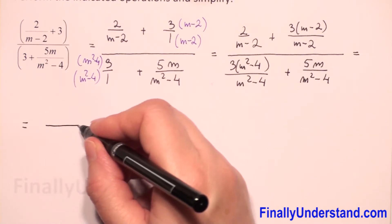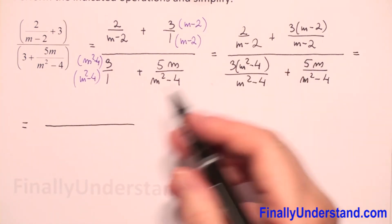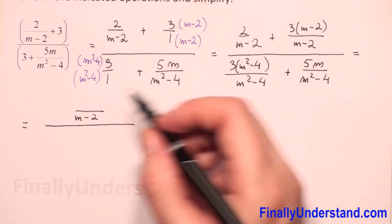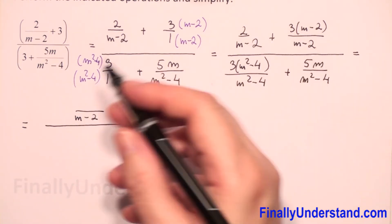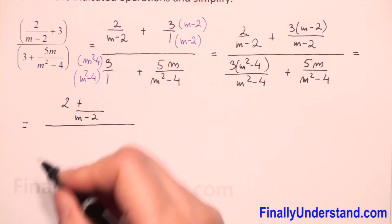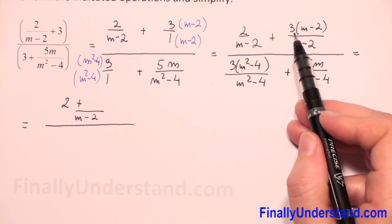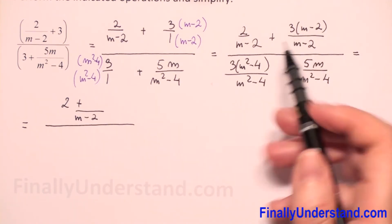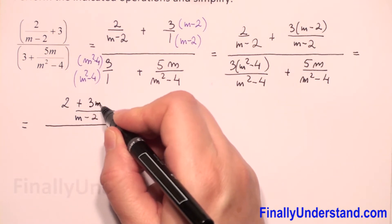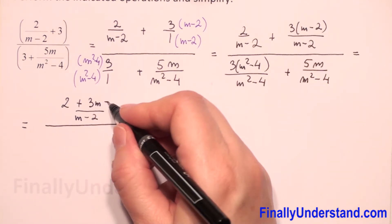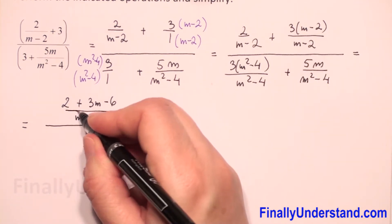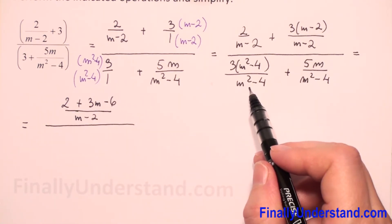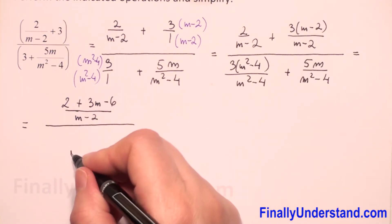Now we have the same denominators, so we have to copy the denominator and just add the numerators. We have 2 plus, and here we do the multiplication: 3 times m gives 3m, 3 times negative 2 is negative 6. The same we will do with the numerator (m squared minus 4) — we will copy it.